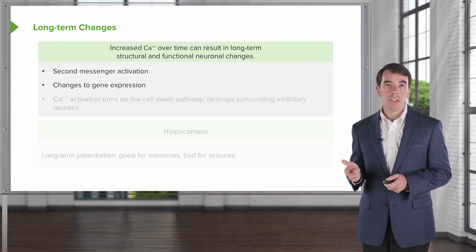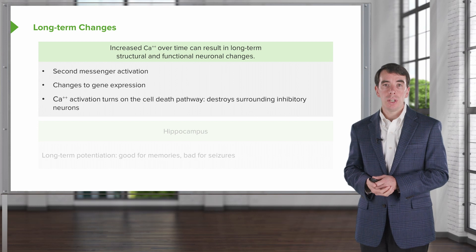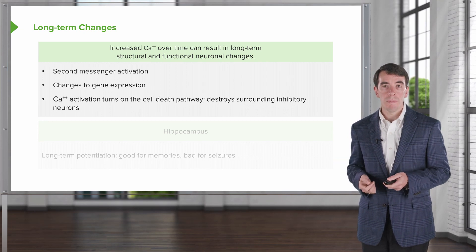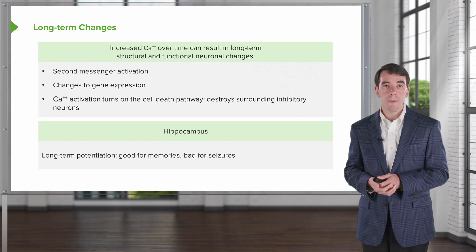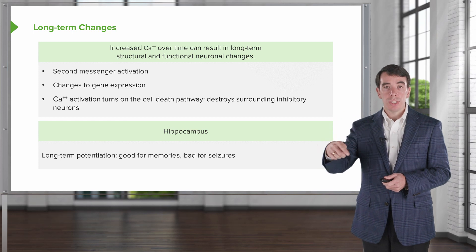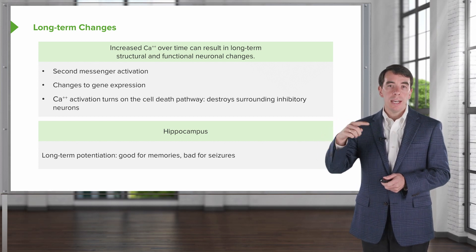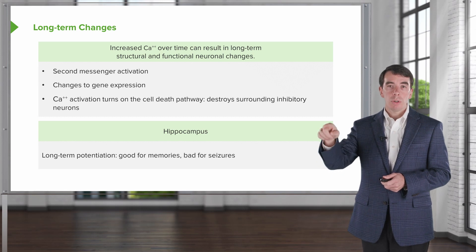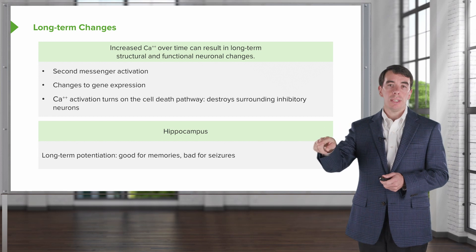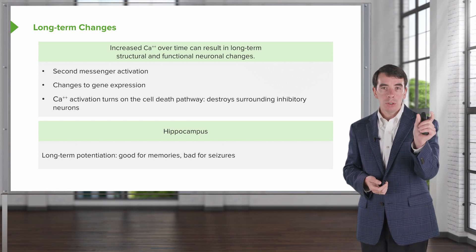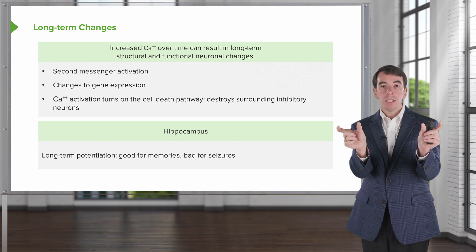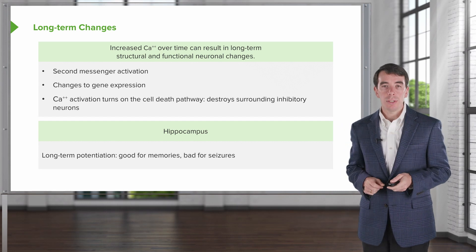There's second messenger activation and changes to gene expression. Calcium activation turns on cell death pathways that can destroy surrounding inhibitory neurons and increase excitatory tone. The hippocampus is an important and epileptic region to think about here. Long-term potentiation is the process in the hippocampus that allows us to lay down new memories, where circuits of neurons can become repeatedly activated very easily. The hippocampus is therefore at higher risk of developing seizures and more prone to epilepsy. In fact, long-term seizures in one hippocampus can co-opt the other hippocampus into becoming a second nidus of seizure development.